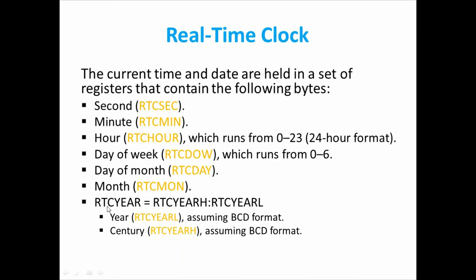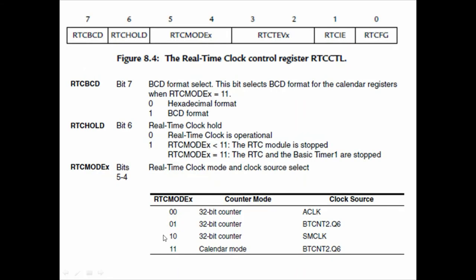For the year, since a single byte can only store two digits, two registers are used: RTCYERH for the upper byte and RTCYERL for the lower byte. Regarding individual bits: bit 7 (RTCBCD) — if 0, the clock works in hexadecimal format; if 1, it works in BCD format. BTC hold — if 0, the RTC is operational; if 1, the RTC module is stopped. If RTC mode EX is 11, both RTC and Basic Timer are stopped.